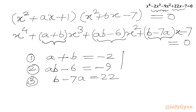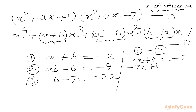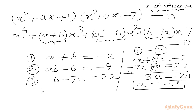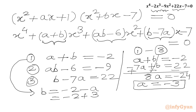Now I will subtract equation 3 from equation 1: (a + b) - (b - 7a) = -2 - 22. The b terms cancel, giving 8a = -24. Dividing both sides by 8, a = -3. From equation 1, b = -2 - a = -2 - (-3) = 1. So a = -3 and b = 1.